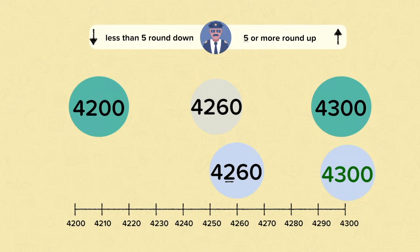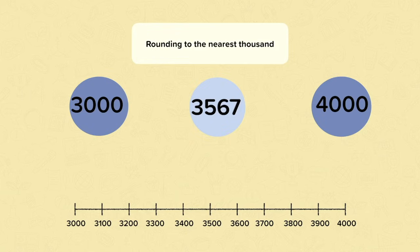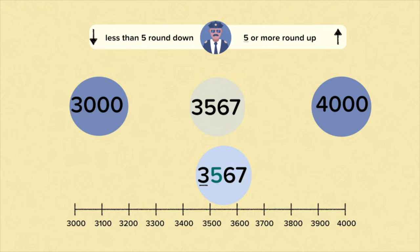Now let's have a look at rounding to the nearest thousand. Here we've got 3567. It's between 3000 and 4000. What we need to do is look at the thousands digit, because we're rounding to the nearest thousand. Then we move one space to the right and focus on that digit and apply the rounding rules. This digit is five, and if the digit is five or more, we know we need to round up. So we round up to 4000.